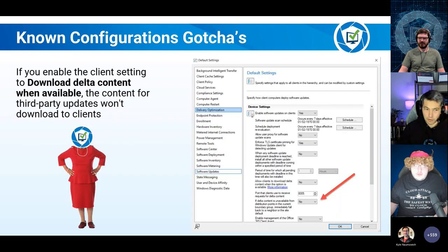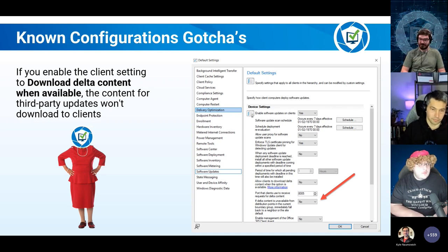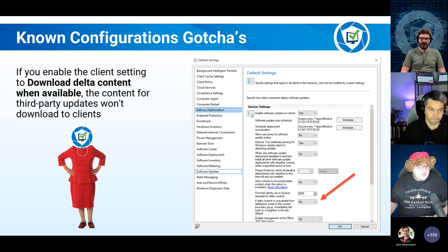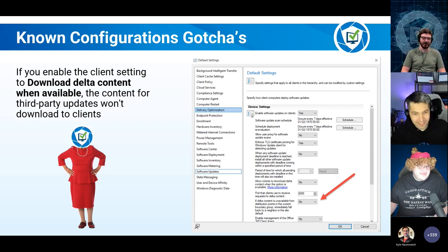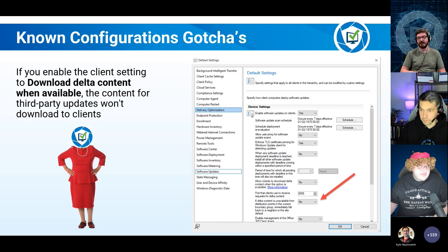Another gotcha: within the software update section, there is a delta content option — 'allow clients to download delta content when available.' If that's set to yes and you have third-party patches, it can cause issues with third-party patching specifically. So if you've got a CMG and you're doing third-party patching with content hosted on the CMG, this checkbox can definitely cause you a little bit of headache. Something to keep in mind.